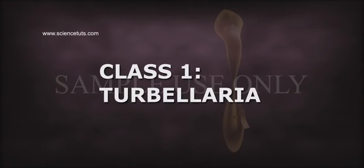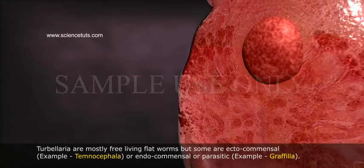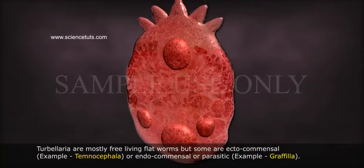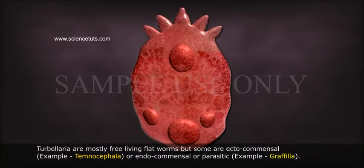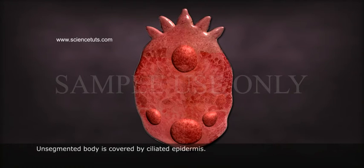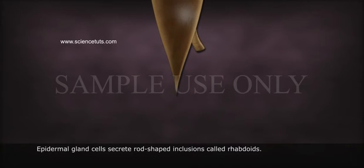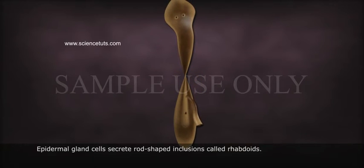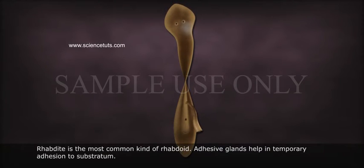Class I: Turbellaria. Turbellaria are mostly free-living flatworms, but some are ectocommensal, e.g. Temnocephala, or endocommensal or parasitic, e.g. Grephala. The unsegmented body is covered by ciliated epidermis. Epidermal gland cells secrete rod-shaped inclusions called Rhabdoids. Rhabdite is the most common kind of rhabdoid. Adhesive glands help in temporary adhesion to the substratum.